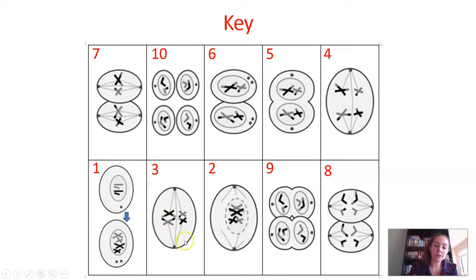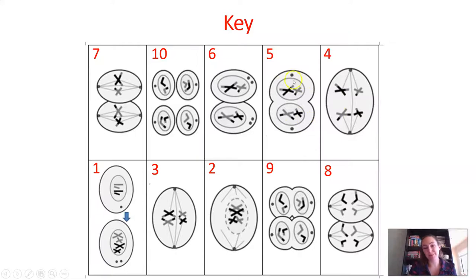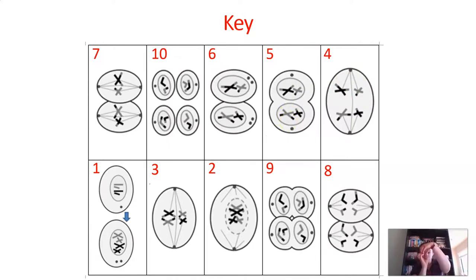After homologues are lined up in the center, the spindle fibers start pulling those homologues to opposite sides of the cell. We see the homologous chromosomes getting pulled to opposite spindle poles and being pulled apart. Then those new sets of chromosomes — half the full set — arrive at one nucleus and half at another, and the outer cell membrane starts to pinch and separate as well.